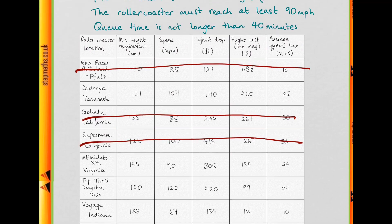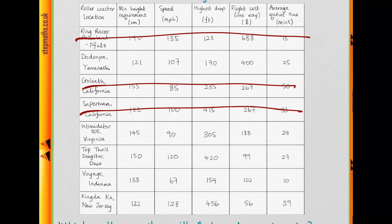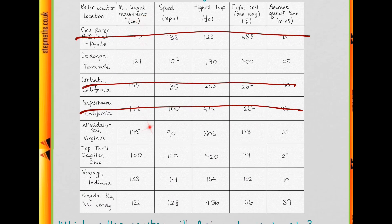Now to eliminate the rest, we'll use the information they give. We're told that Anton is 143cm tall. If we look at the minimum height requirements, these two have height requirements taller than Anton, so we'll get rid of another 2.